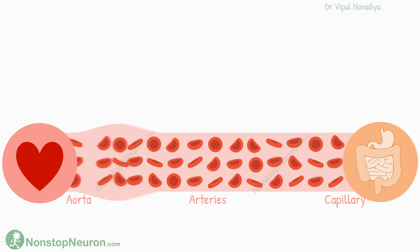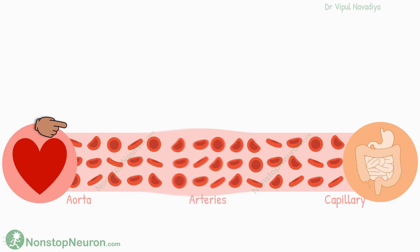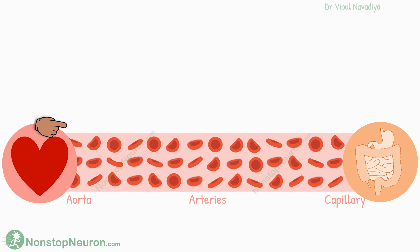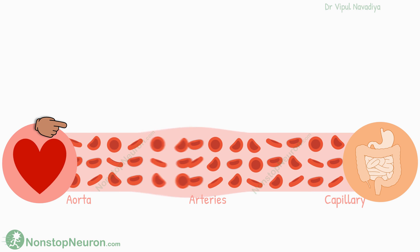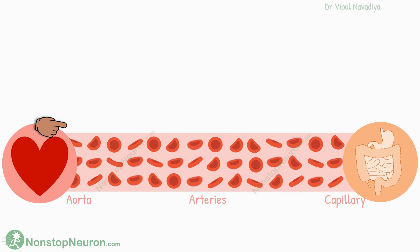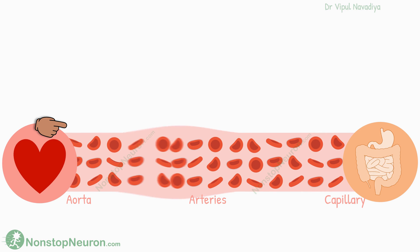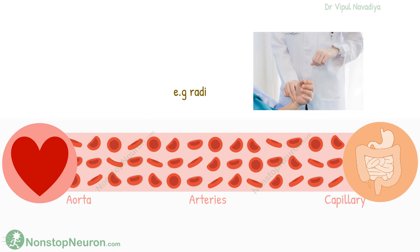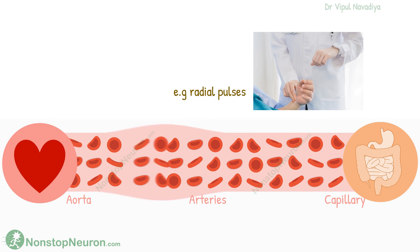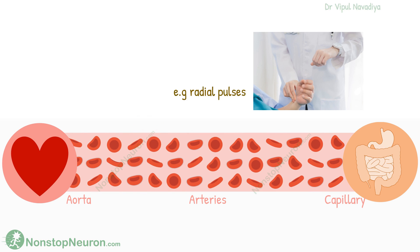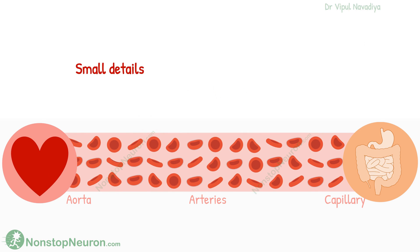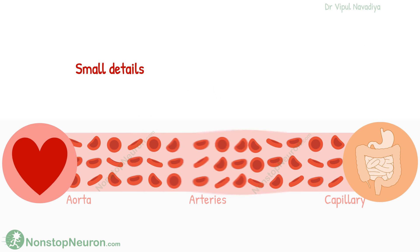Now, come back to the arteries. As the pressure wave travels from the aorta to subsequent vessels, the pressure causes distension of respective vessels. In fact, it's these distensions that you feel when you examine the radial pulses at the wrist. Now let's dive deeper into the smaller details about the pulses.